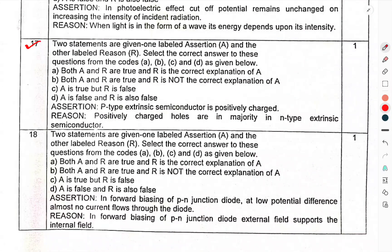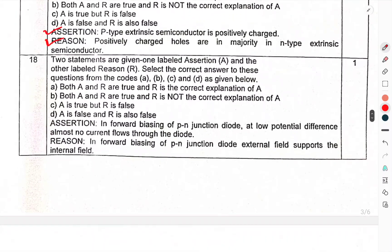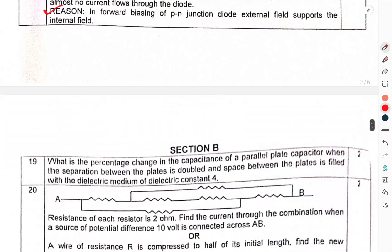Question 17: Two statements are given, one labeled assertion A and other labeled reason R. Assertion: P-type extrinsic semiconductor is positively charged. Reason: Positively charged holes are majority in p-type extrinsic semiconductor. Question 18: Assertion: In forward biasing p-n junction diode at low potential difference, almost no current flows through the diode. Reason: In forward biasing p-n junction diode, external field supports the internal field.